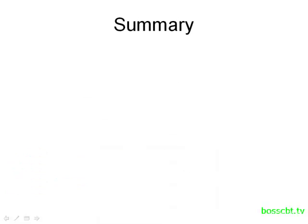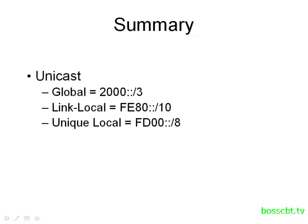Let's summarize what we covered. IP version 6 uses unicast with three classes: global unicast, which are the publicly routable IPs; link local unicast, used only between devices on the same network segment; and unique local unicast, which are the private IPs for IP version 6. You should get familiar with the prefixes these three groups come from and be able to identify a particular unicast type just by looking at the prefix.